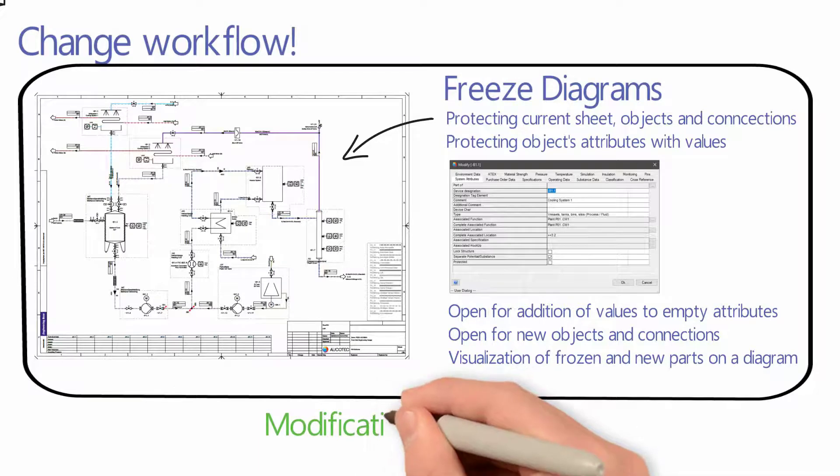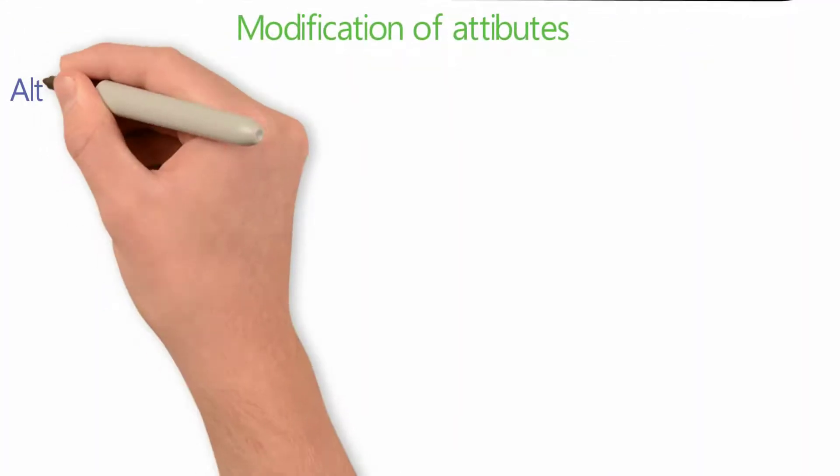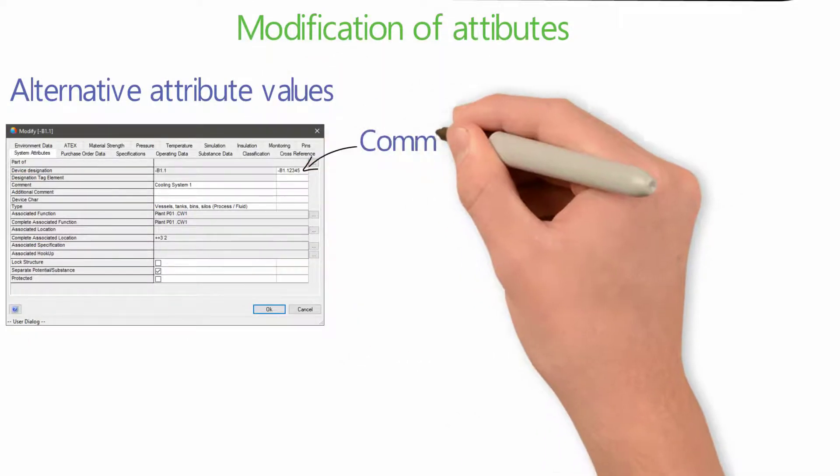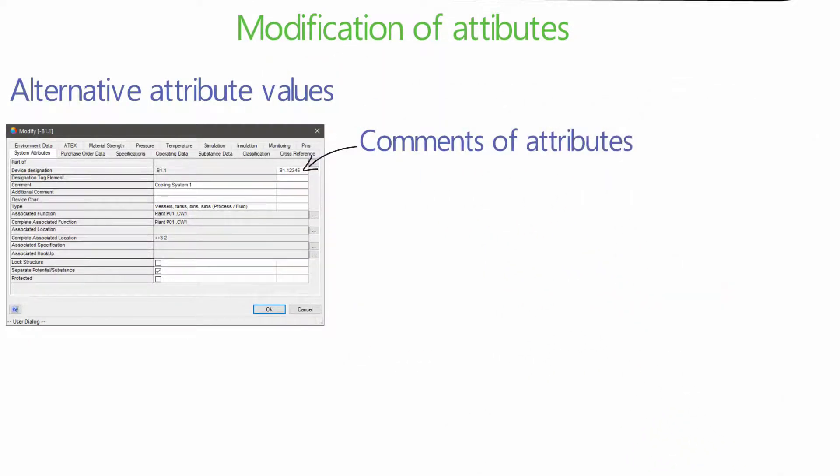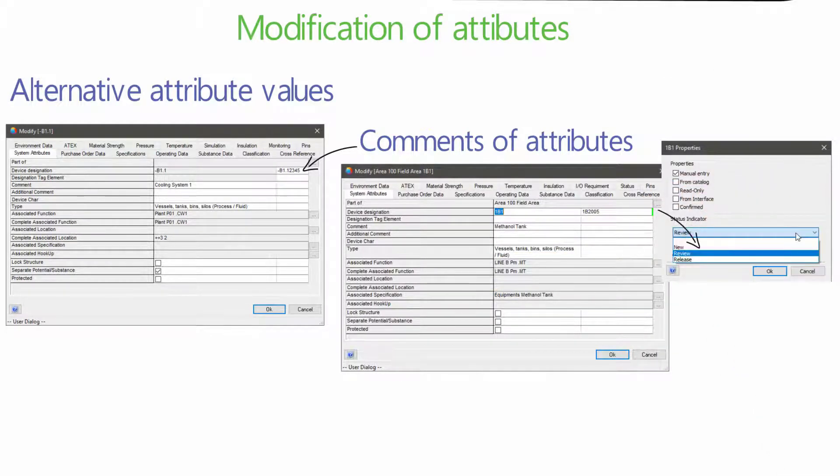Whether frozen or not, modification of attributes can also be done in parallel alternative fields. The status of each attribute can also be modified and visualized with color identifications.